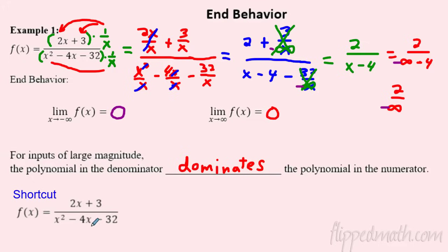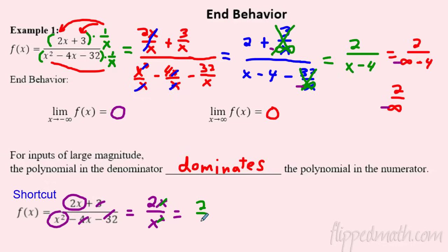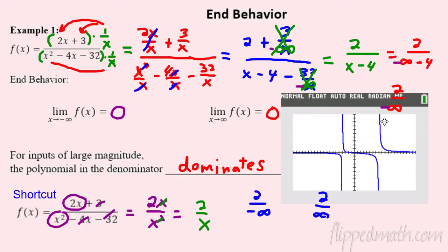Is there a faster way? Yes — the shortcut: I only care about the highest degree on top and the highest degree on bottom. The rest are just going to get blown away. So I've really got 2x over x squared. That x cancels one of these, leaving 2 over x. Plug in infinity: 2 over infinity, and 2 over negative infinity — both go to zero. Let's verify with the graph: as it goes right it approaches zero, as it goes left it also approaches zero. Confirmed.